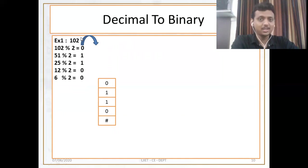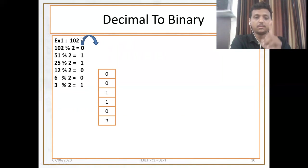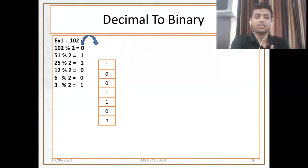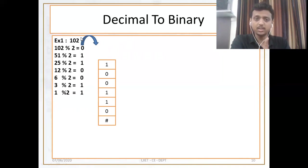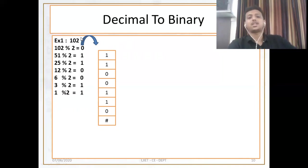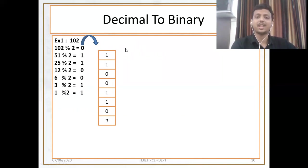6 mod 2 is again 0 — push inside the stack. 3 mod 2 is 1 — push inside the stack. Next and last step: as I got 1 as my quotient, I stop here. So 1 mod 2 is equal to 1 — push inside the stack. This is my last step. Now I just need to pop each and every element from the stack and append it with my final output string.